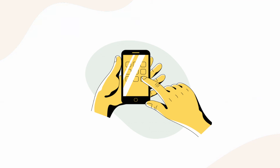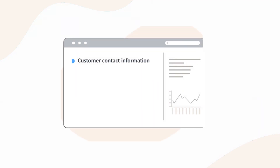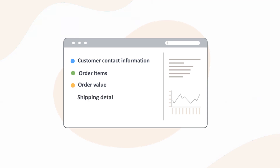With just a few clicks, you can view important details like customer contact information, order items, order value, shipping details, and even custom attributes and properties.